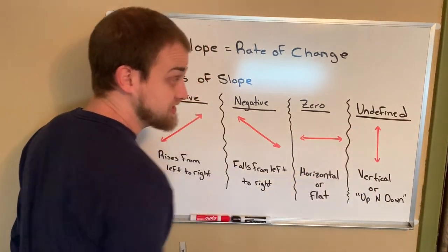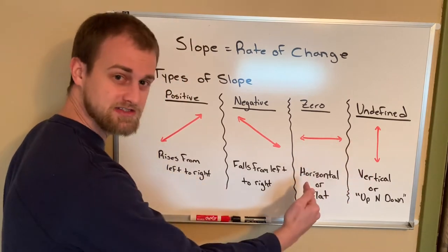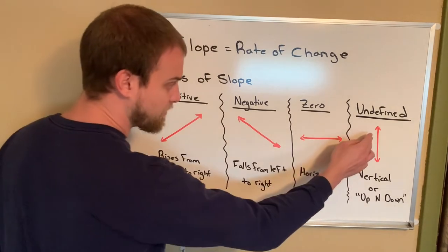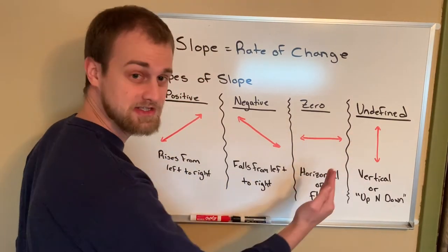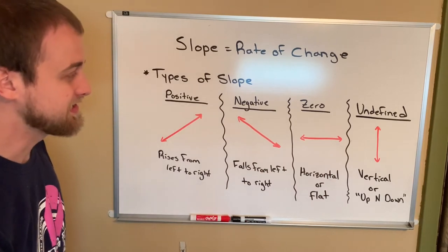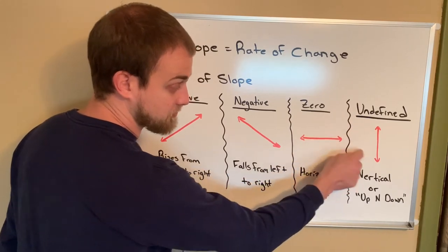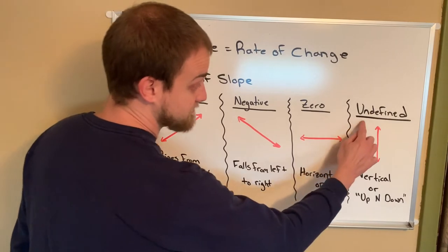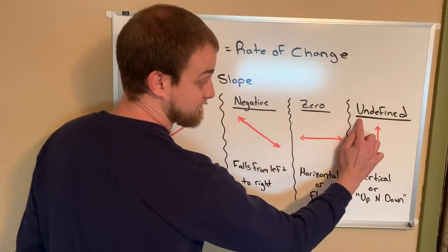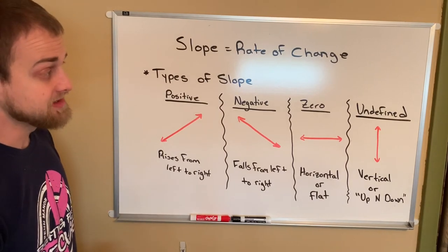Last but not least, we have what's called undefined slope. Undefined slope means this line doesn't really have any tilt to it — but it does, but it doesn't, because it's straight up and down. This is kind of a hole in our math system where there's really no number that can describe the tilt to this line, because there really isn't one, but there is at the same time. What we need to understand is that undefined slope will be vertical lines. A good way to remember what undefined slope looks like: undefined are lines that are up and down. And if you look at the first three letters of undefined — U, N, D — up and down. So that's just a way that we can remember what undefined slope looks like.